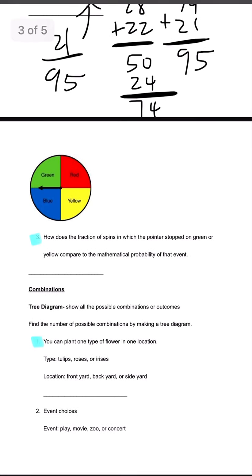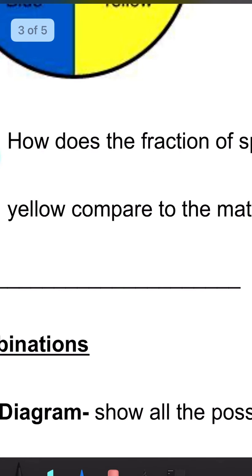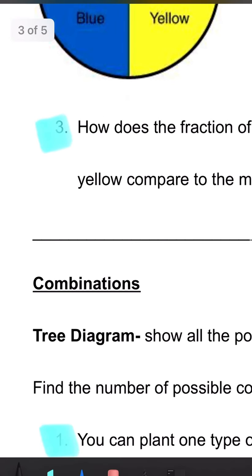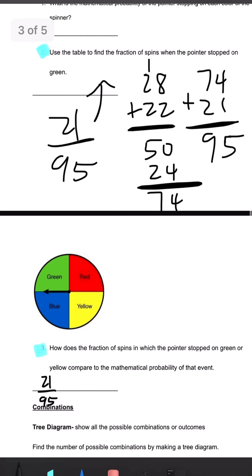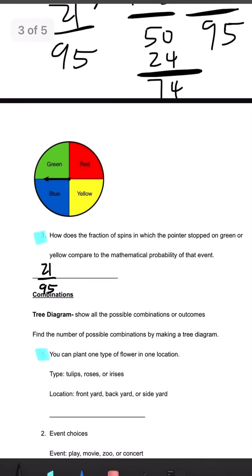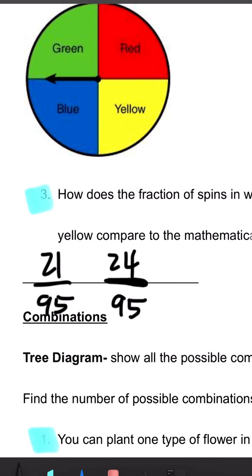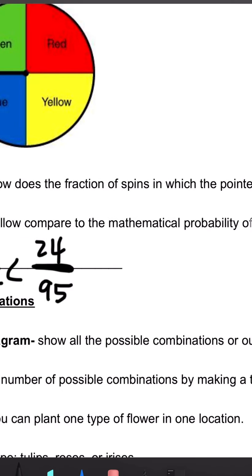Number 3, how does the fraction of spins in which pointer stops on green or yellow compare to the mathematical probability of that event? So we'll just be comparing green and yellow. We already know that green is 21 over 95. So let's find yellow. Yellow is going to be 24 over 95. So we know that yellow has a better chance.